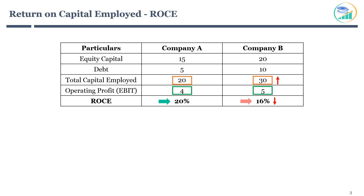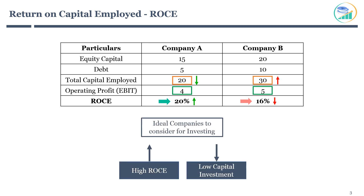Company A has relatively low capital employed and high ROCE. It's important for a business to generate high return on overall capital employed in order to be more efficient and profitable. You should look out for companies that have the ability to produce relatively high return on low capital investment.